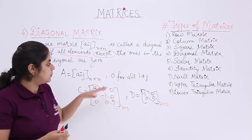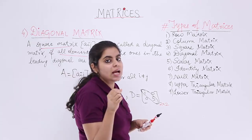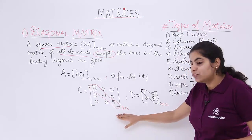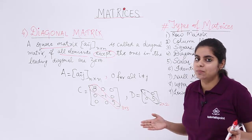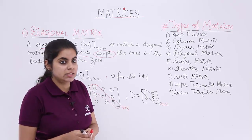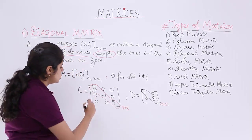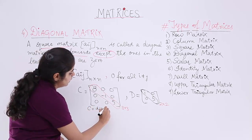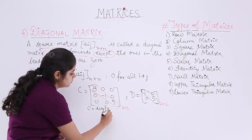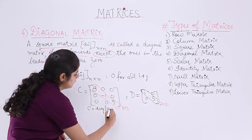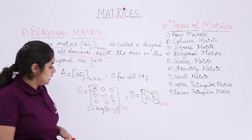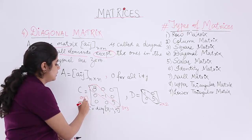One more thing to consider after the examples is representation. Suppose we have a diagonal matrix of any order, say order n. Representation is very simple. For example, matrix C is a 3 by 3 matrix, so it is written as C = diag(8, -1, 5), where 'diag' is the short form of diagonal, and the elements listed are a11 = 8, a22 = -1, and a33 = 5. Writing C in matrix form or in this diag notation is the same.